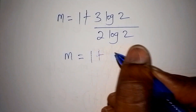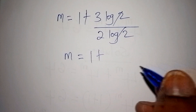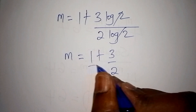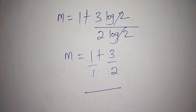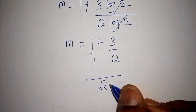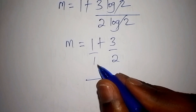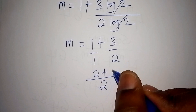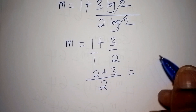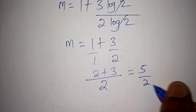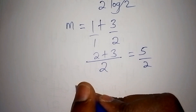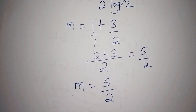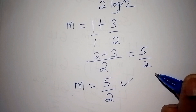The log 2 in the numerator and denominator cancel, leaving m equals 1 plus 3 over 2. Finding the LCM of 2: that gives us 2 over 2 plus 3 over 2, which equals 5 over 2. So the value for m is 5 over 2.